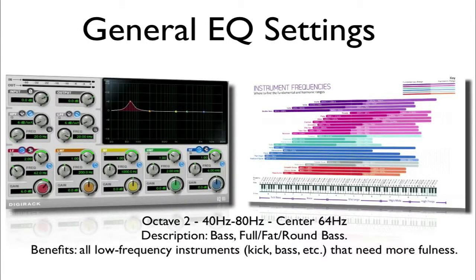Octave 2, 40 Hz to 80 Hz with a center point of 64 Hz, will have a very bassy, full, fat, round bass type of sound. The benefits for this are for any instruments that are low in frequency, like kick drums and basses, that need more fullness.